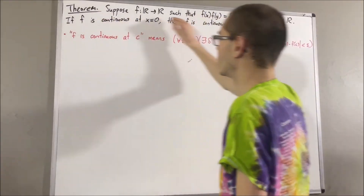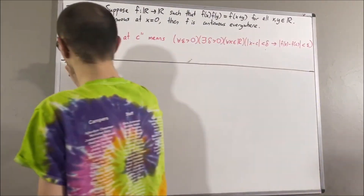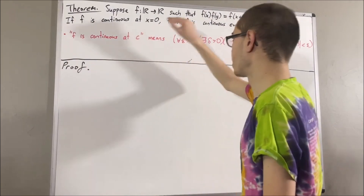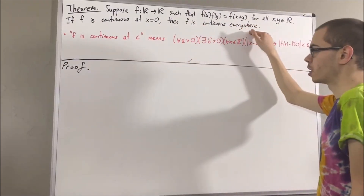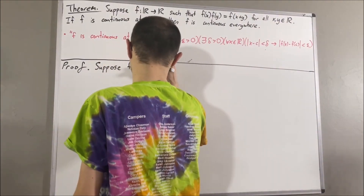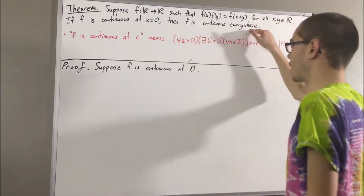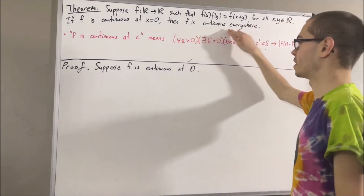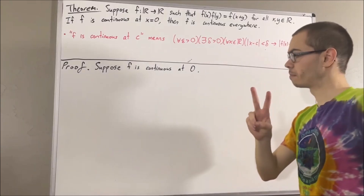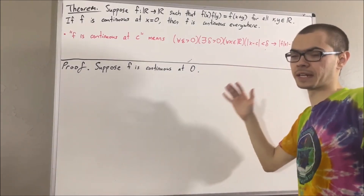Now let's get into proving this theorem. We're trying to prove: if f is continuous at 0, then f is continuous everywhere. So let's suppose f is continuous at 0. The goal is to prove that f is continuous everywhere, and we're going to split this up into two cases: either f of 0 is equal to 0, or f of 0 is not equal to 0.